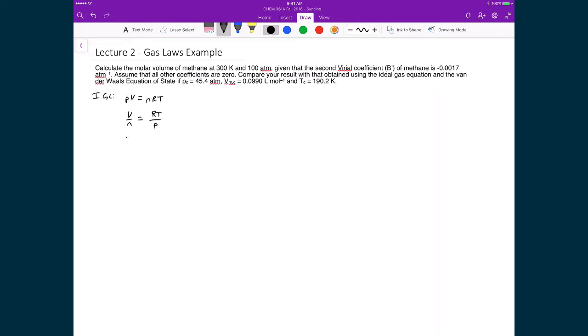And so what that means on the left hand side is that I have the molar volume, and that's equal to the gas constant. Since my pressure is in atmospheres, I'm going to use the appropriate gas constant, which has units in atmospheres. The temperature is 300 Kelvin, and the pressure is 100 atmospheres. And so what that leaves me with is a molar volume of 0.246 liters per mole.